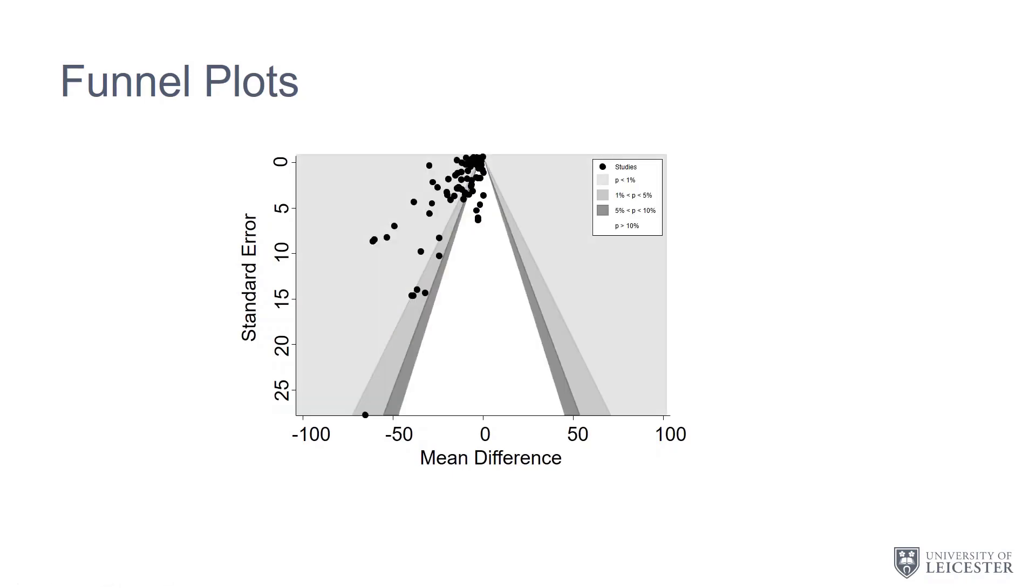To help with interpretation even further, we can add these contours to the plot and get what we call a contour enhanced funnel plot. So what we have here is these lines represent the 1%, 5%, and 10% levels for statistical significance.